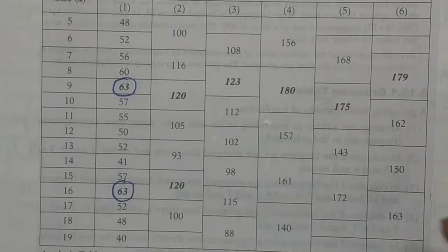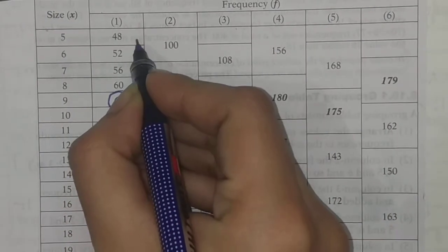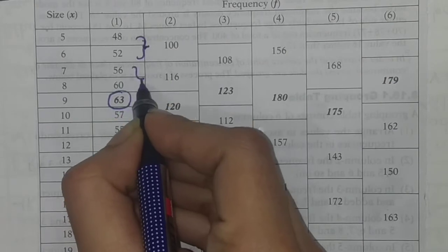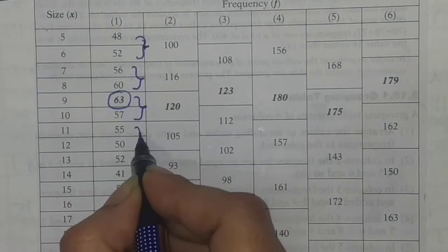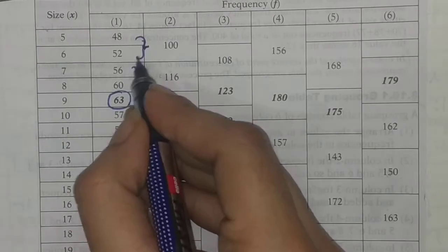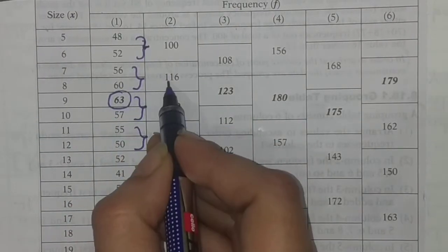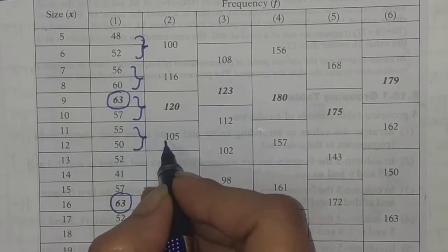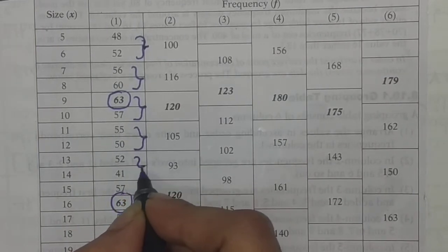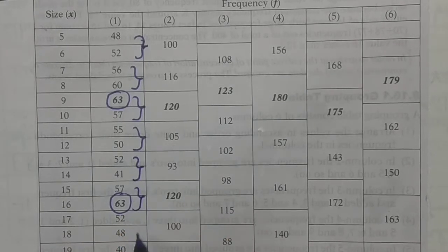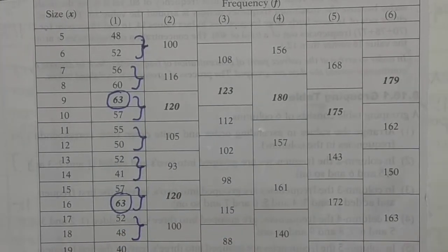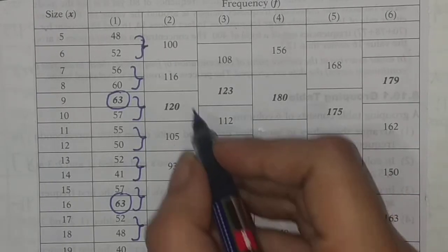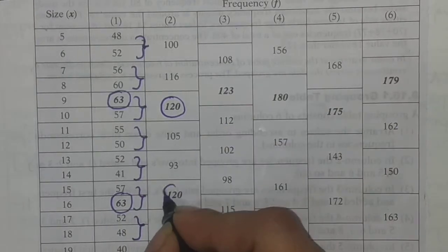Now let's start the second column. You have to total the first two frequencies, then the next two frequencies, and write them in front. First plus second total is 100, third plus fourth total is 116, fifth plus sixth total is 120, then sixth plus seventh total, and so on. One item has been removed at the end. Now we have to see which is the biggest number: 120 appears twice.